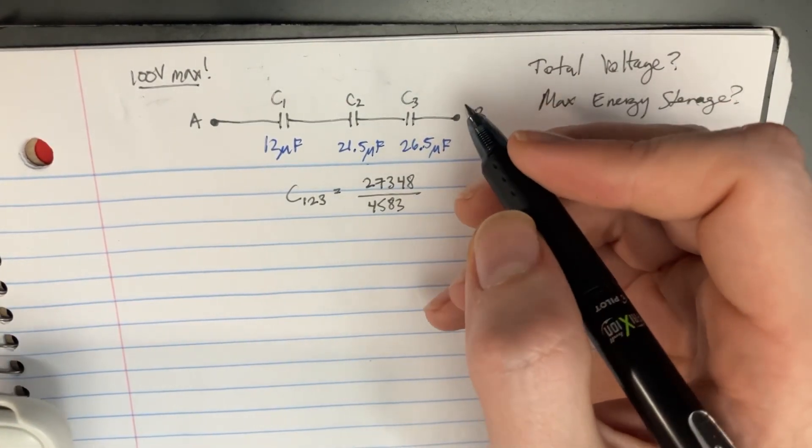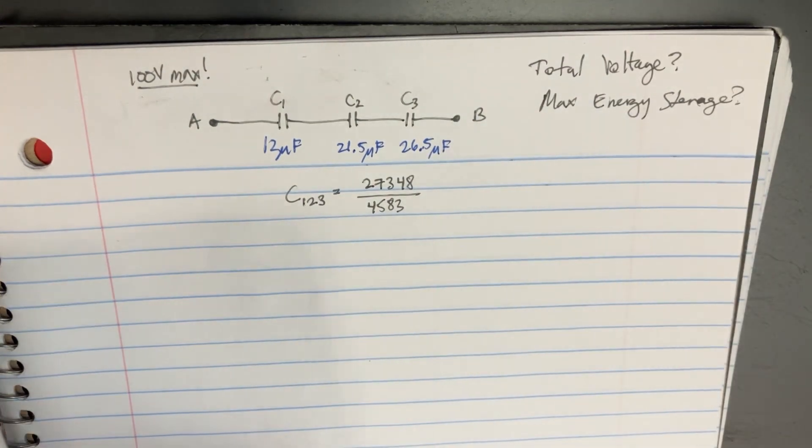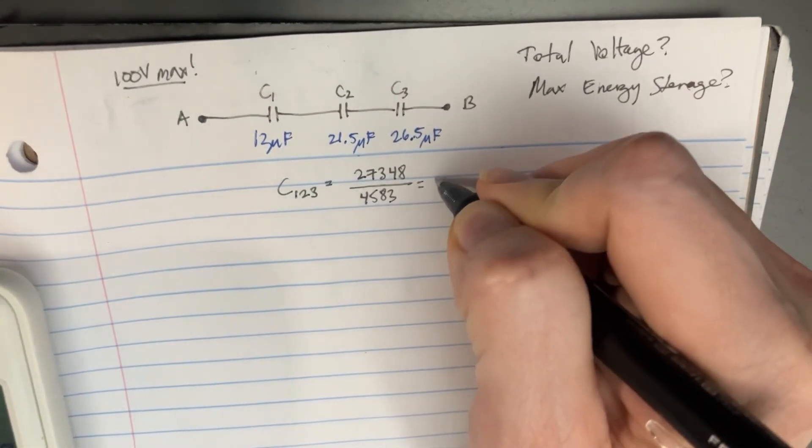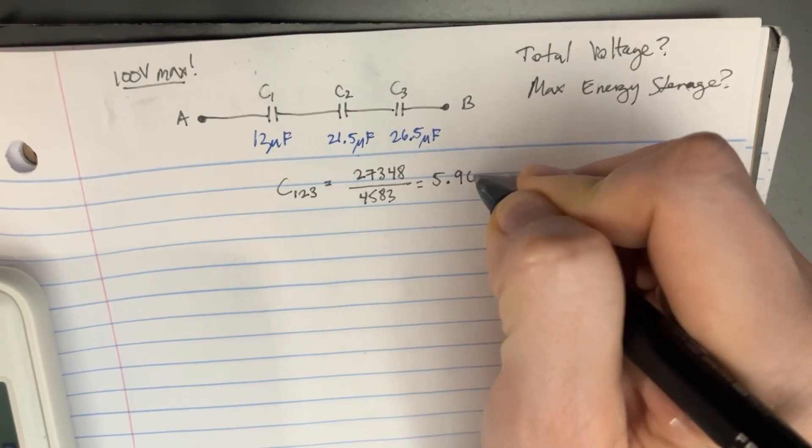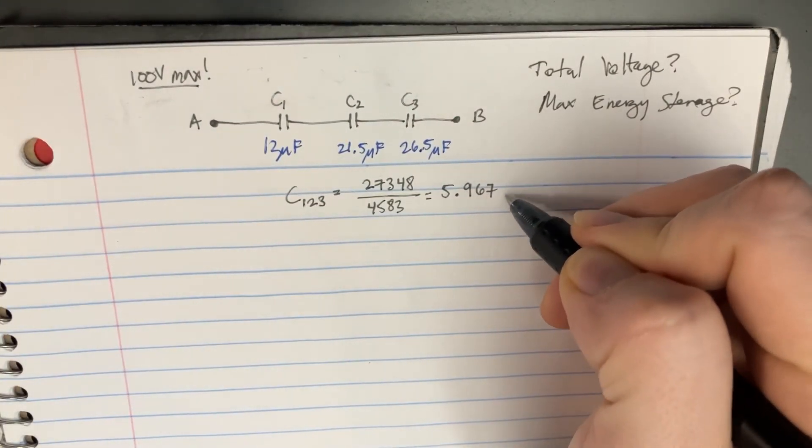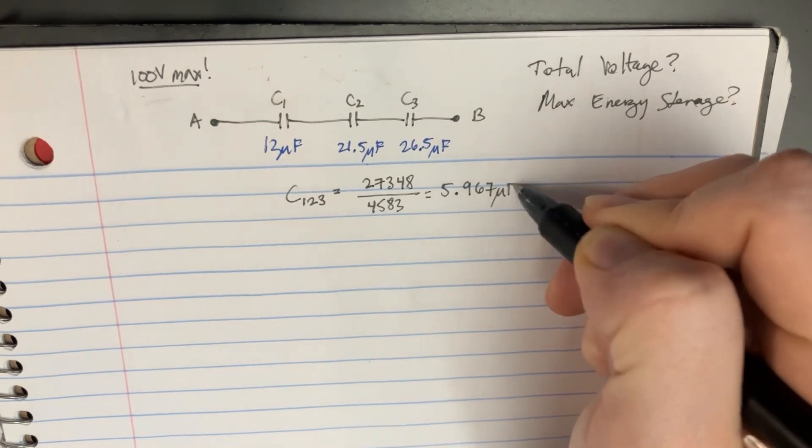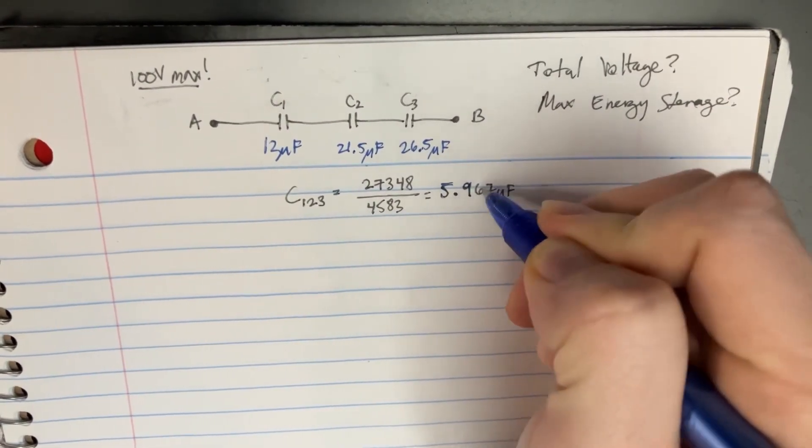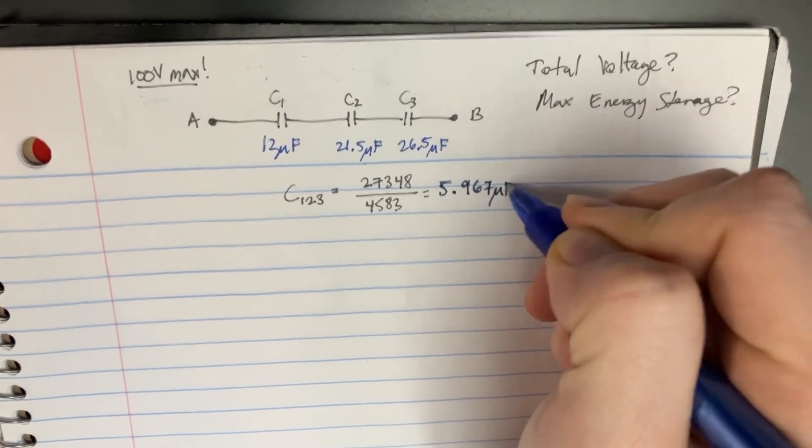We'll simplify that down by taking the reciprocal here. So 27348 divided by 4583. We'll basically get 5.967 as the first capacitance. And this will be in microfarads. So that's going to be the total thing that we can do for everything.